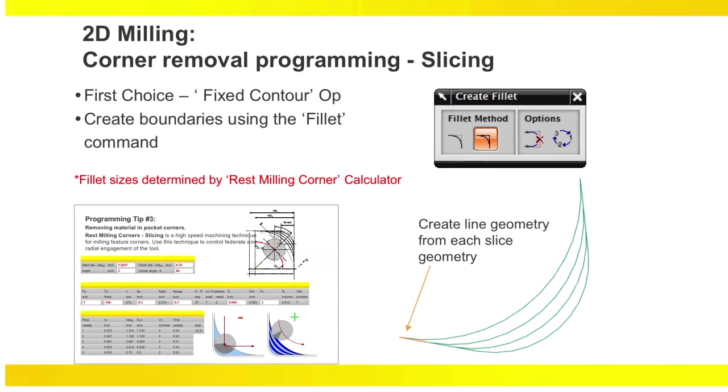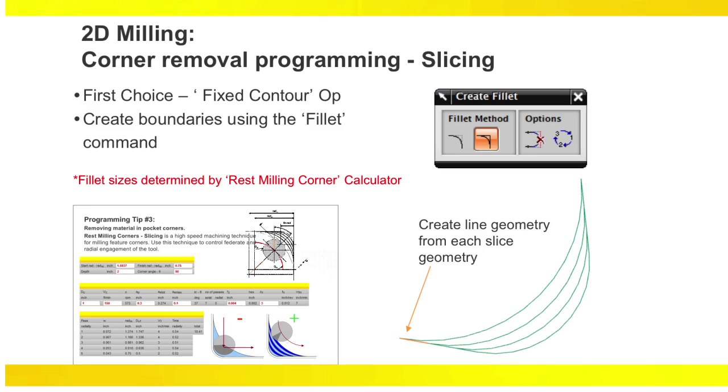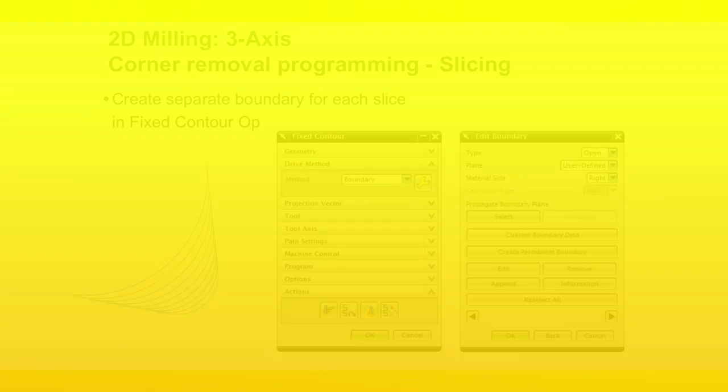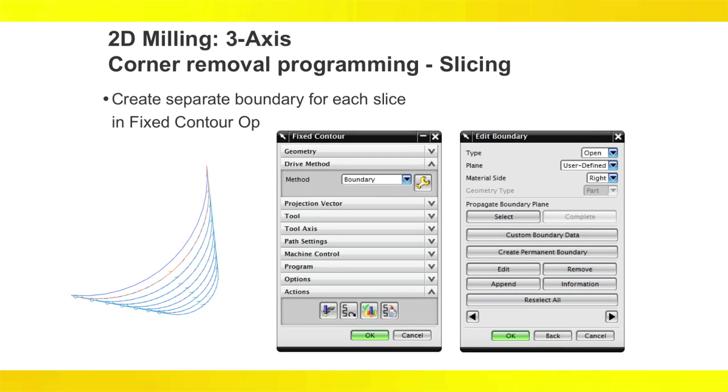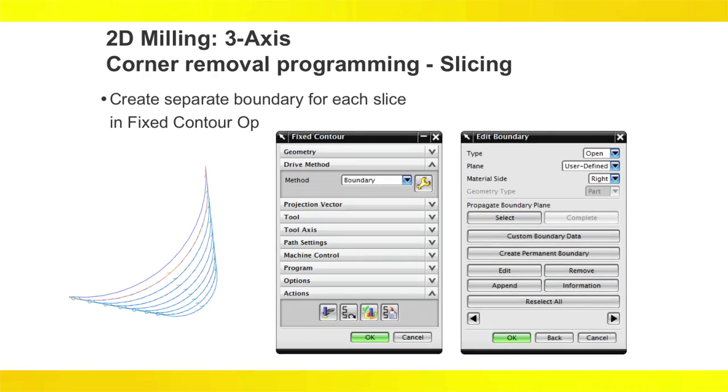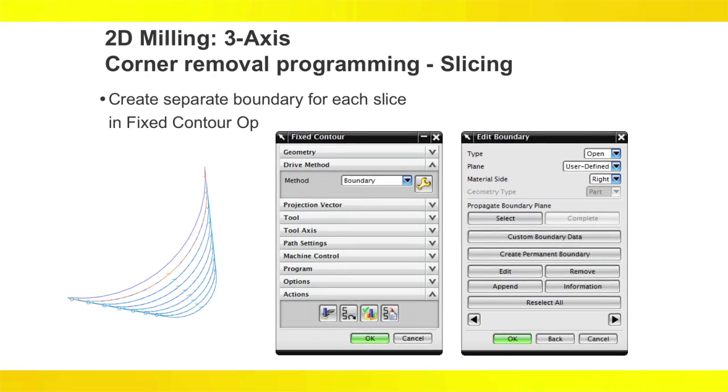Add lines to connect the ends of each fillet. Use the rest milling corner calculator to determine the optimized radius for each fillet. Next in manufacturing mode, use the fixed contour operation, and with drive method set to boundary, select each fillet created as an individual boundary.